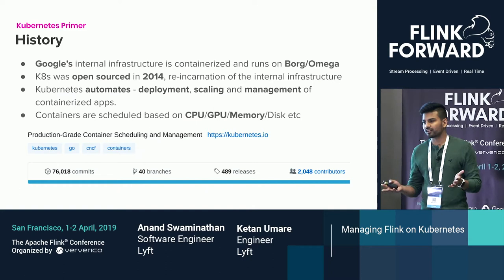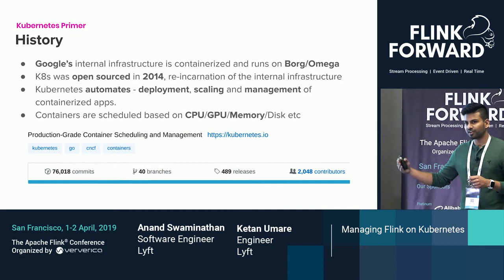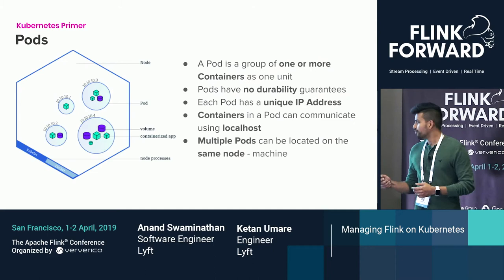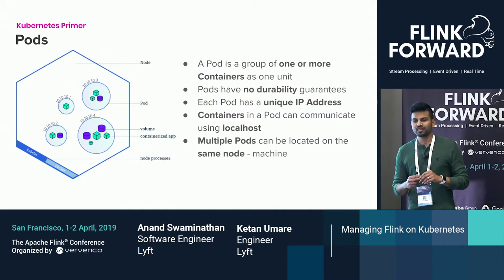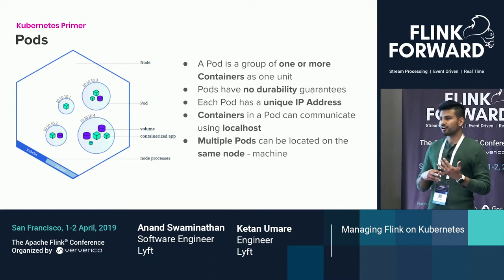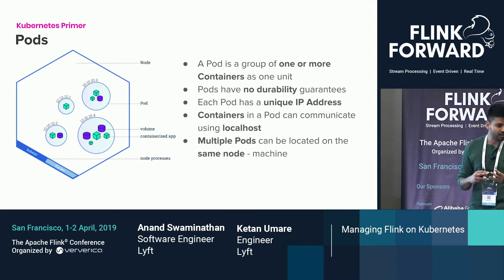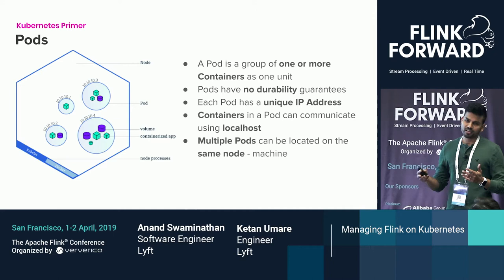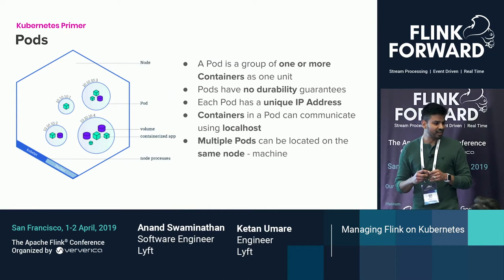You have to specify the CPU, GPU, memory, or disk requirements for the application, and then it goes and gets that machine for you. Diving a little deeper, one of the essential concepts in Kubernetes is a pod. A pod can be seen like a virtual machine — it's not really a virtual machine, there is no hypervisor. It's essentially a group of containers. A pod has an IP address and has no durability guarantees. The containers inside a pod can talk to each other over localhost, which makes it look like a virtual machine, but you can have multiple pods running on the same node.